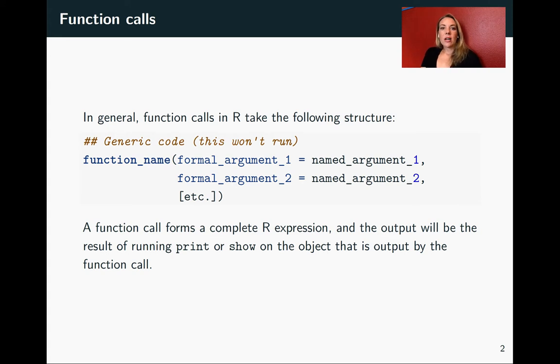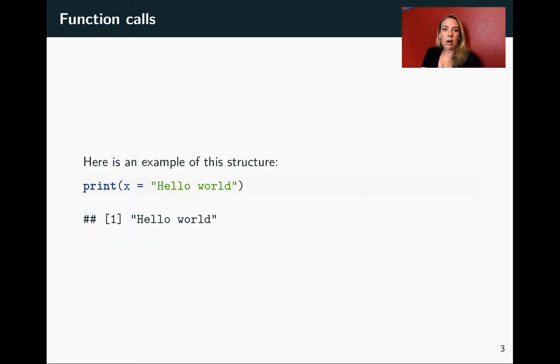In general, a function call in R will take this structure. You'll have the function name to start with, and then in parentheses, you'll have what are called the arguments. For each of those, you can have a formal argument that gives the name of the option you can set, and then you'll put in a named argument for your choice. This together forms a complete R expression, and once it runs, the output will be shown in your R console.